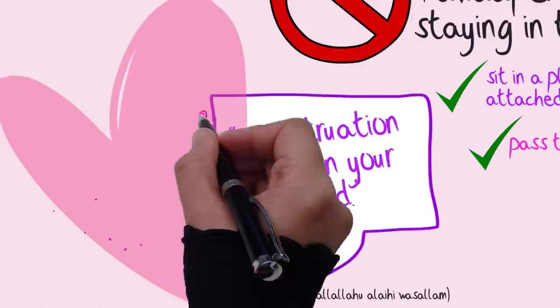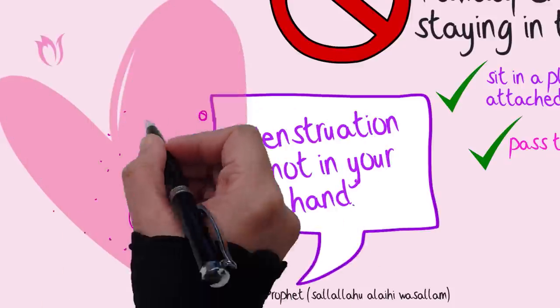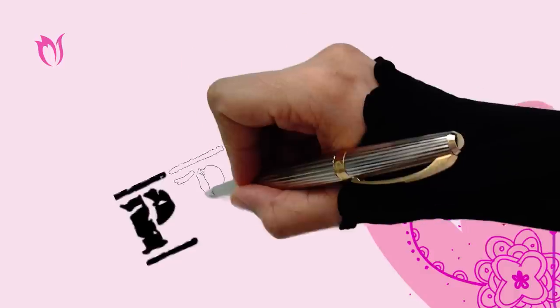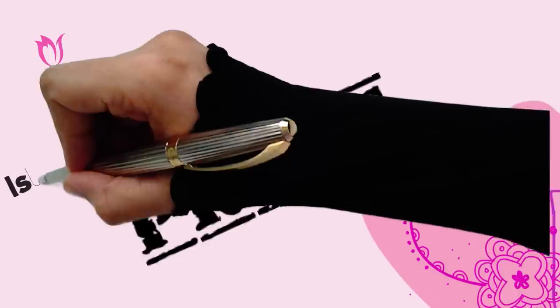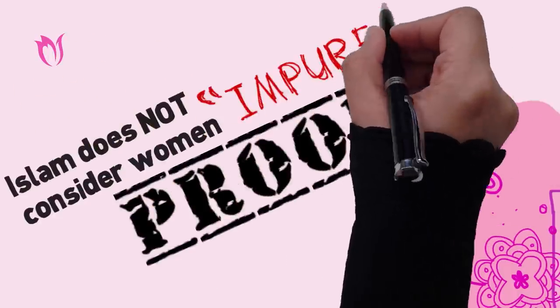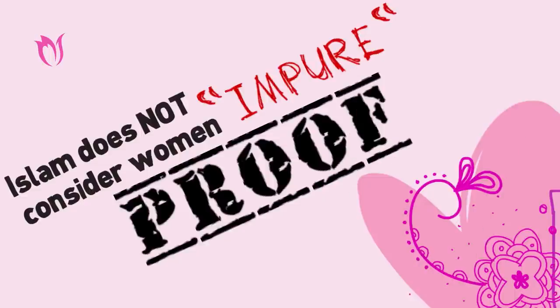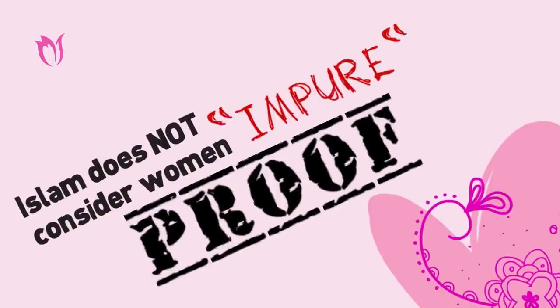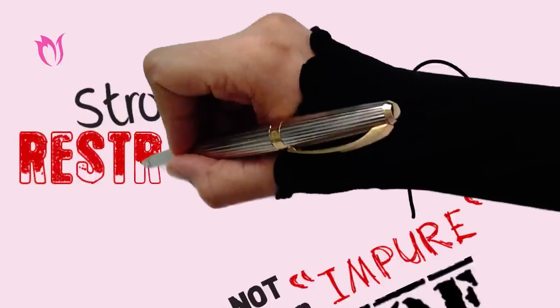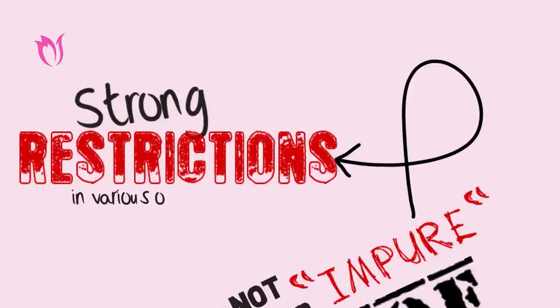Upon this, Allah's messenger remarked, menstruation is not in your hand. Personally, this remark of Allah's messenger gives me great peace of mind and serenity to my heart, because this is a grand proof of the fact that Islam does not consider us women as impure, such that if we were to step inside the masjid we will pollute it.